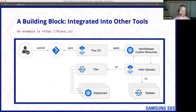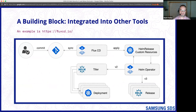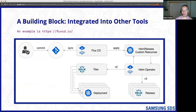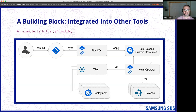Another way you can use Helm is as a building block for other tools. I've grabbed a diagram from Flux, which is another CNCF project. Flux is GitOps — there's a Helm controller you can have running in your cluster that gets configuration updates from Git and applies them to your cluster. It can do this for Helm charts, supporting both Helm 2 and Helm 3. So Helm can very much be used as a building block as part of higher-level constructs.